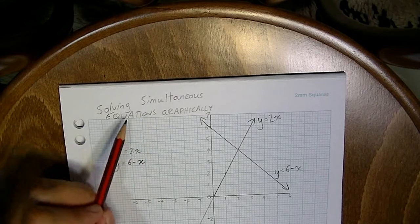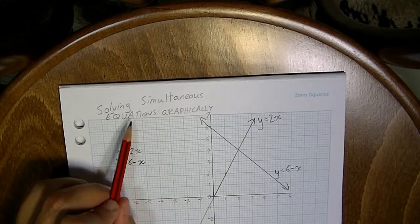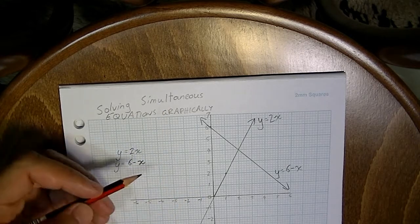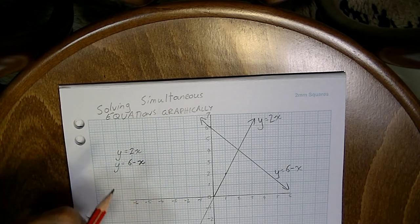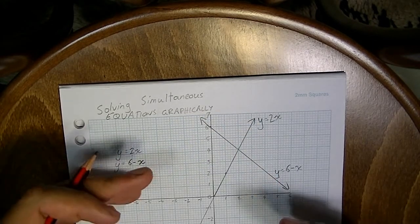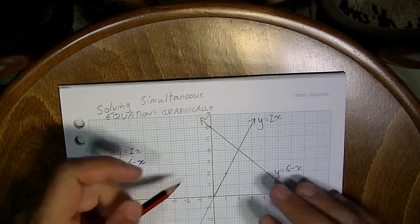Now you should be able to see where we're heading here. Solving simultaneous equations graphically. Remember, a simultaneous solution is a pair of values, an x and a y value, that works for both of these lines. In other words, it's the intersection of those two lines.